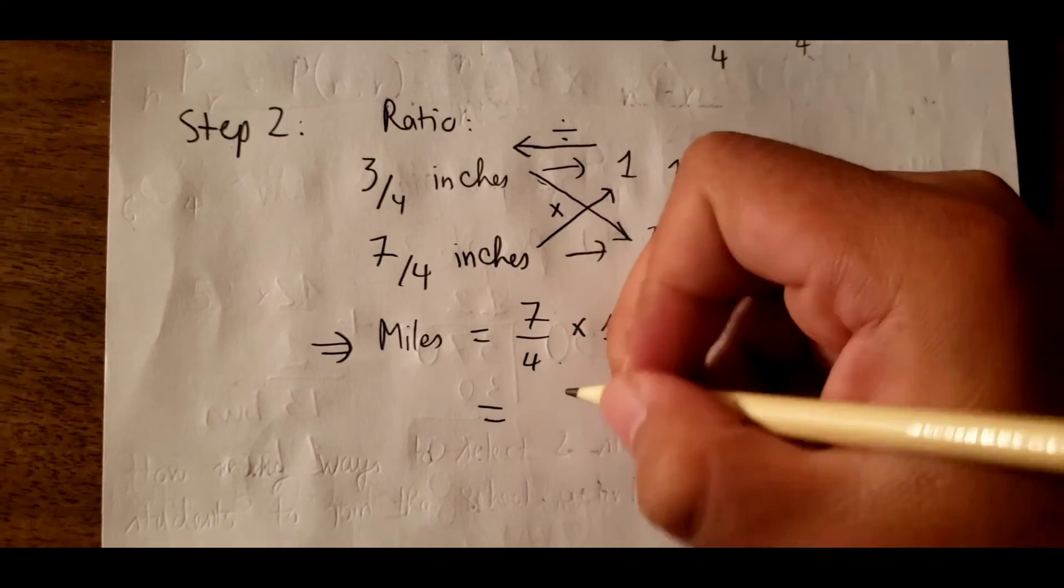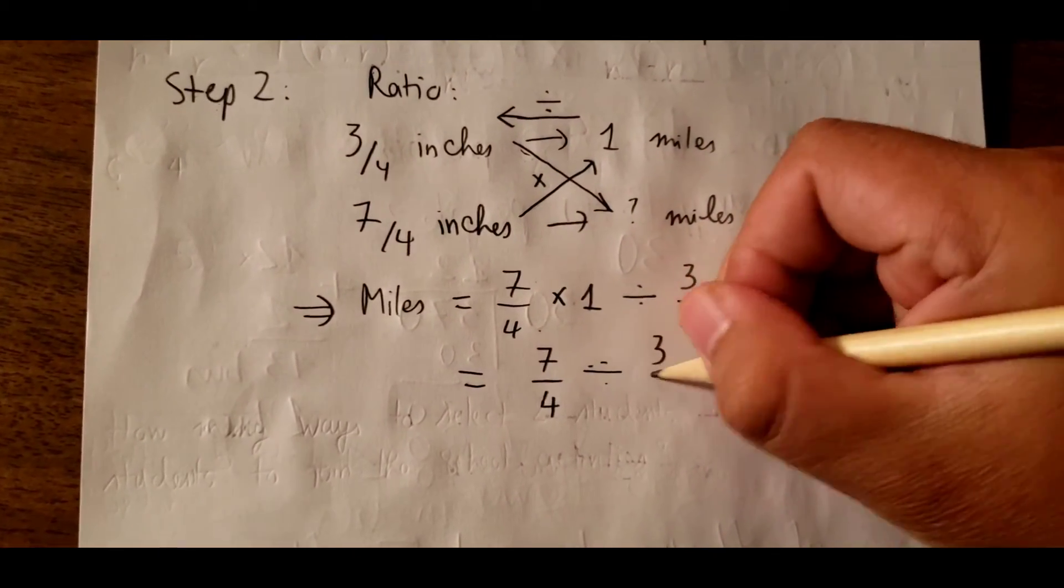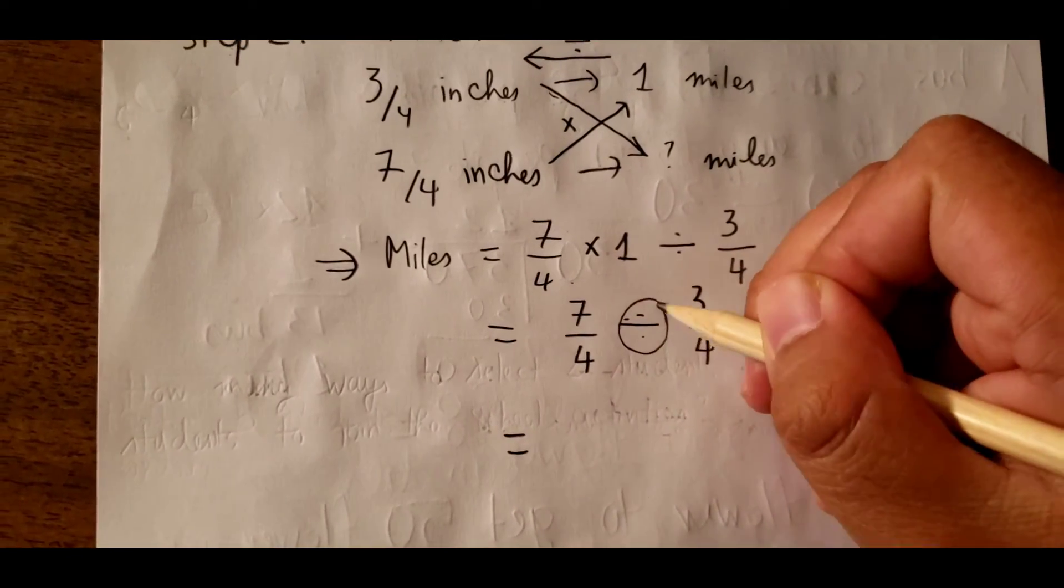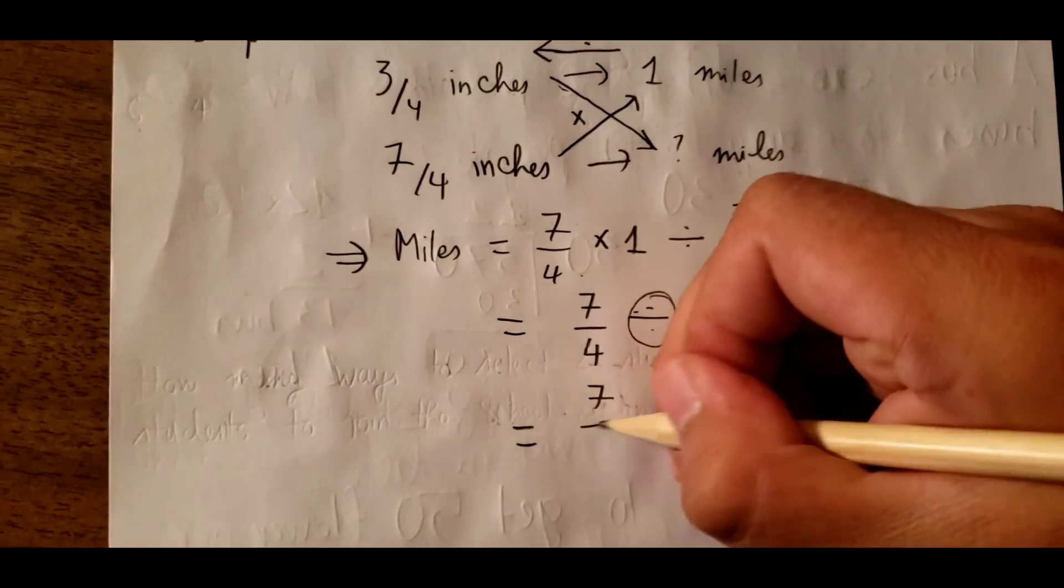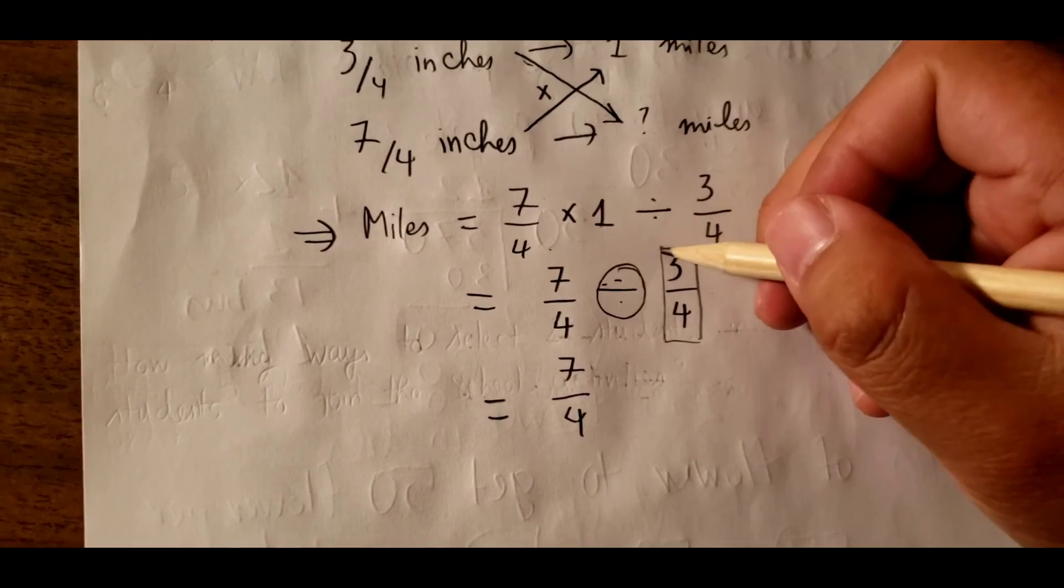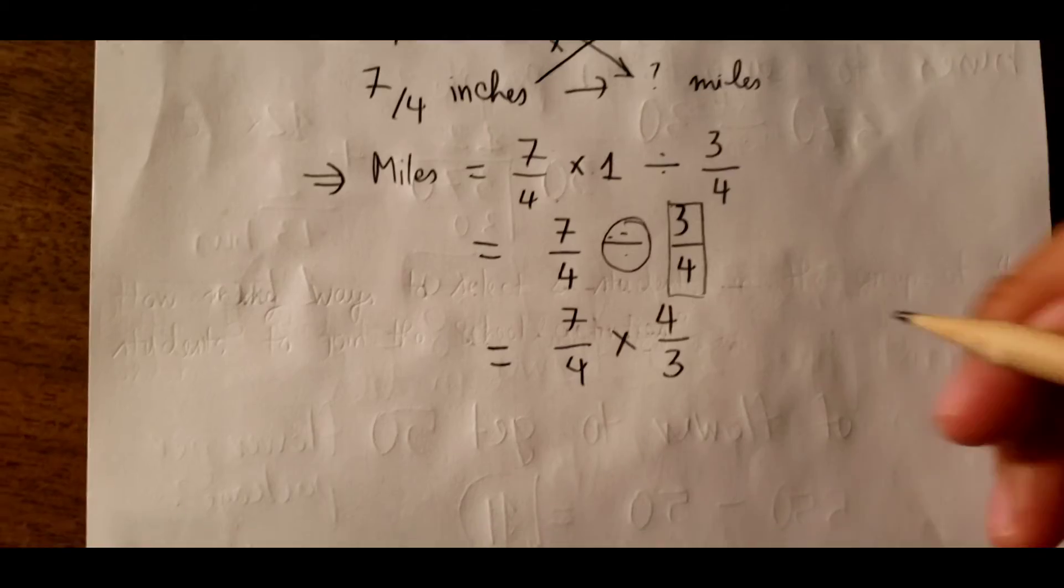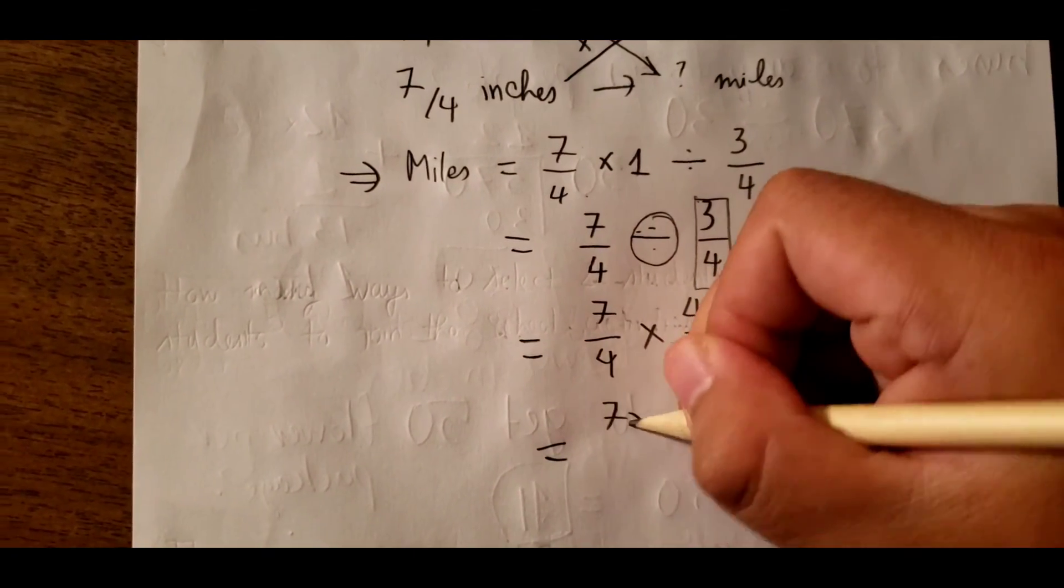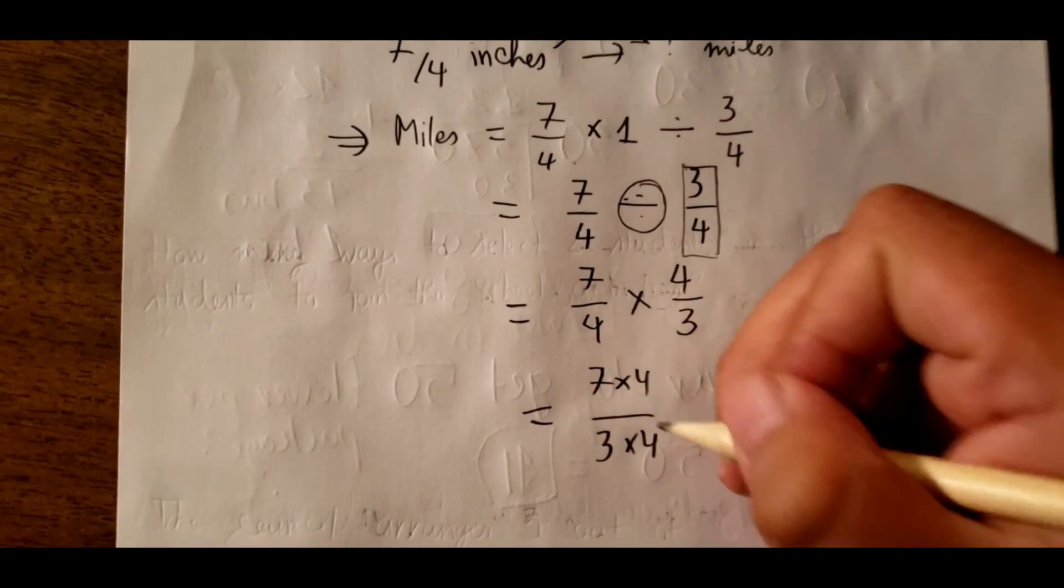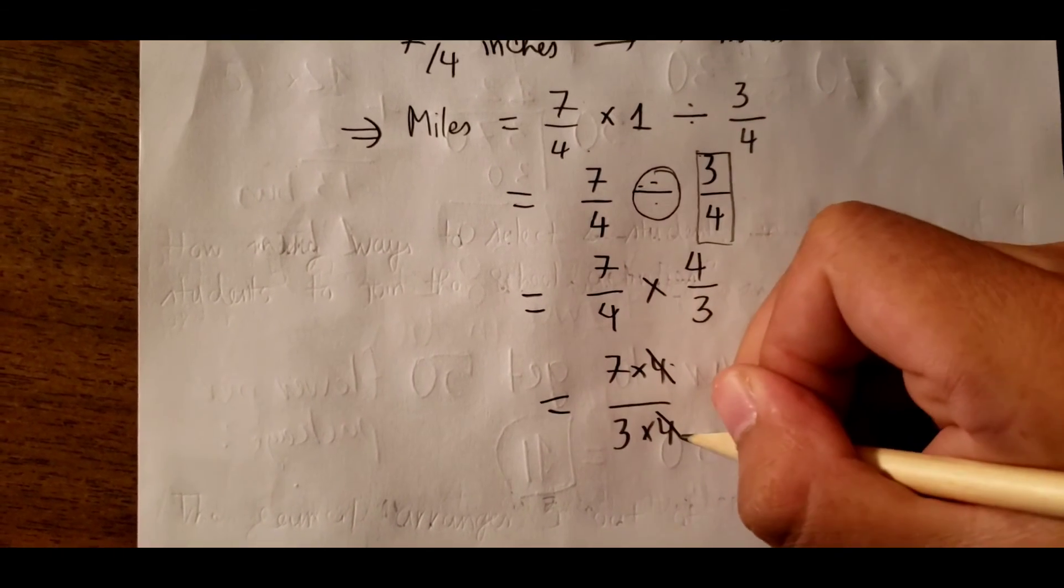We know 7 over 4 multiply with 1 is still 7 over 4. Divide with 3 over 4—that's a division. For division, we can reverse the fraction, so that is 4 over 3. So we have 7 multiply with 4, and 3 multiply with 4. We can simplify 4 and 4 from numerator and denominator.